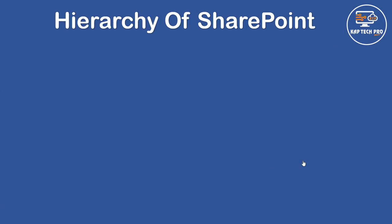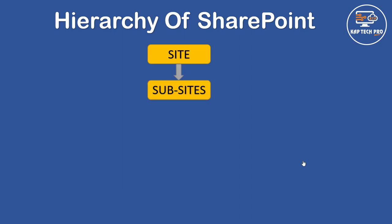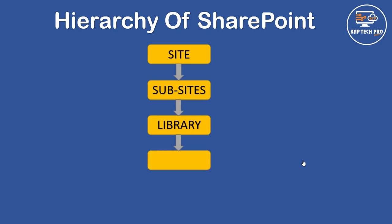So first let's understand the hierarchy of SharePoint. First we create a site on SharePoint Online, which we have already created in the previous video. Then we create subsites — subsites are not necessary, meaning you may or may not create them based on your requirement. Then we create a library, also called a document library, which we can create directly after the site. Then we create a folder, and after creating the folder we create a file.